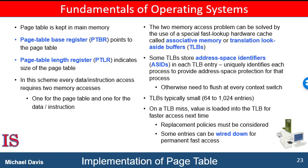A TLB look-up essentially adds no performance penalty. To execute the search within a pipeline step, the TLB must be kept small — typically between 32 and 1,024 entries. Some CPUs implement separate instruction and data address TLBs, which can double the number of TLB entries available. CPUs have evolved from having no TLBs to having multiple levels of TLBs, just as they have multiple levels of caches.